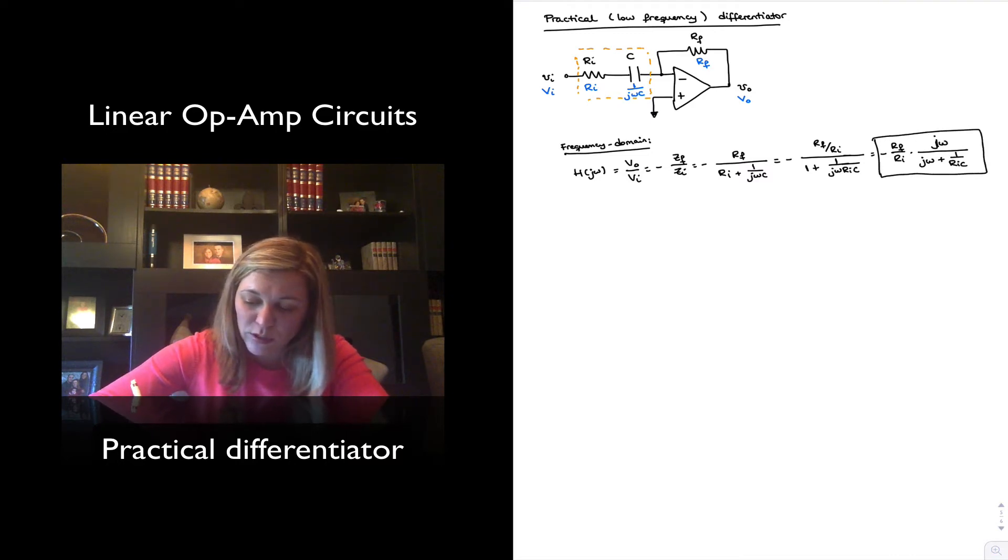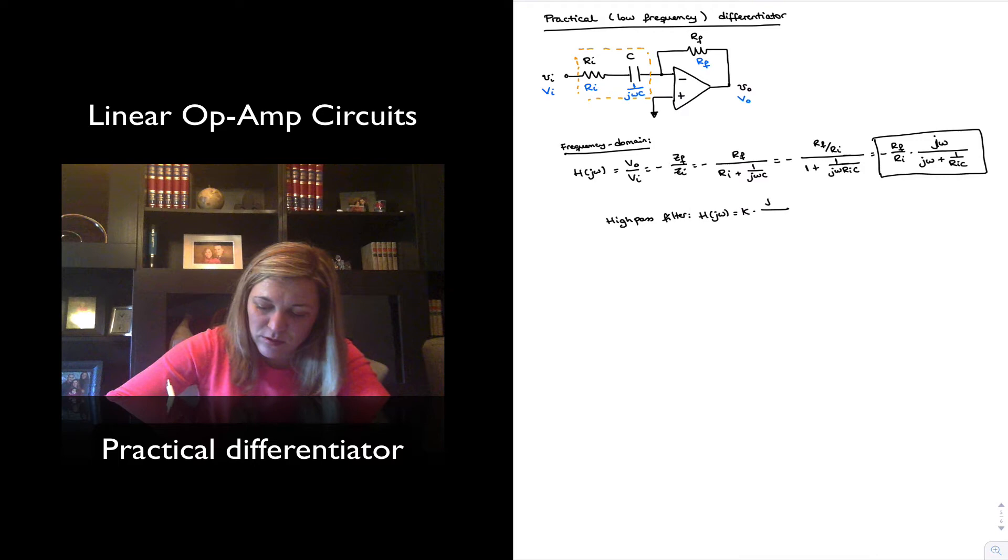That will be an important expression because it resembles the expression for a transfer function of a first-order high-pass filter, which will be h of j omega equals k times j omega divided by j omega plus omega c.